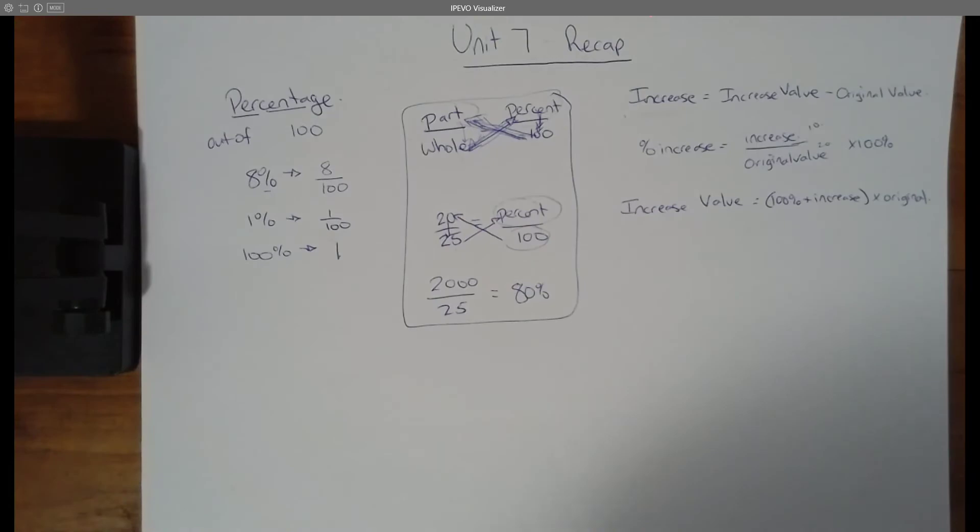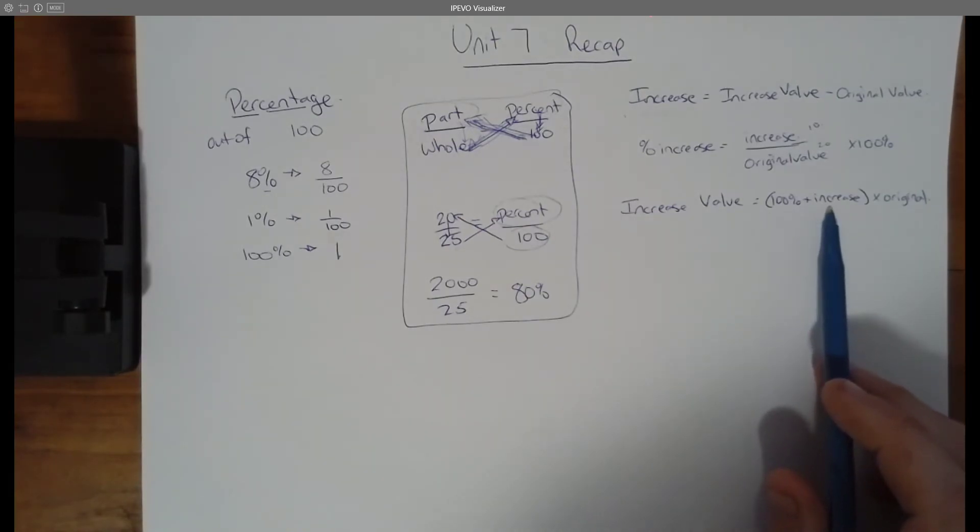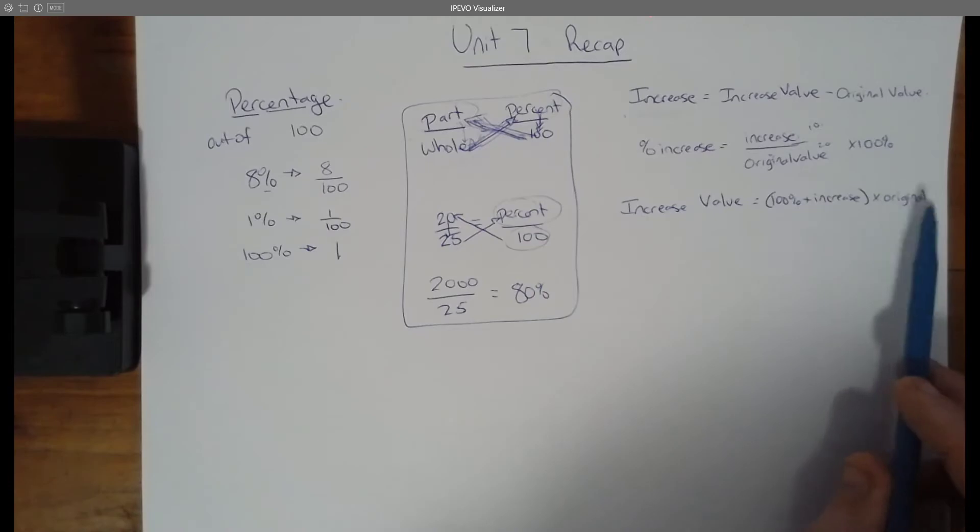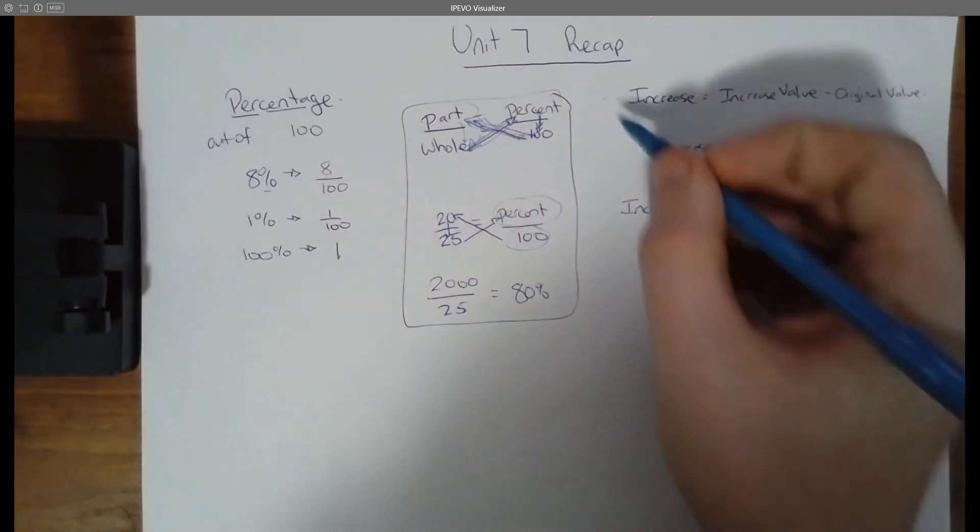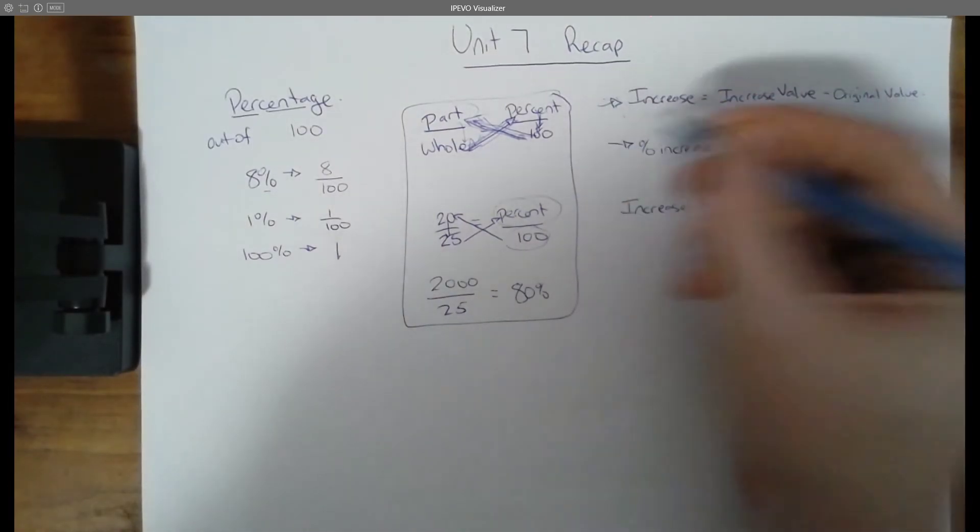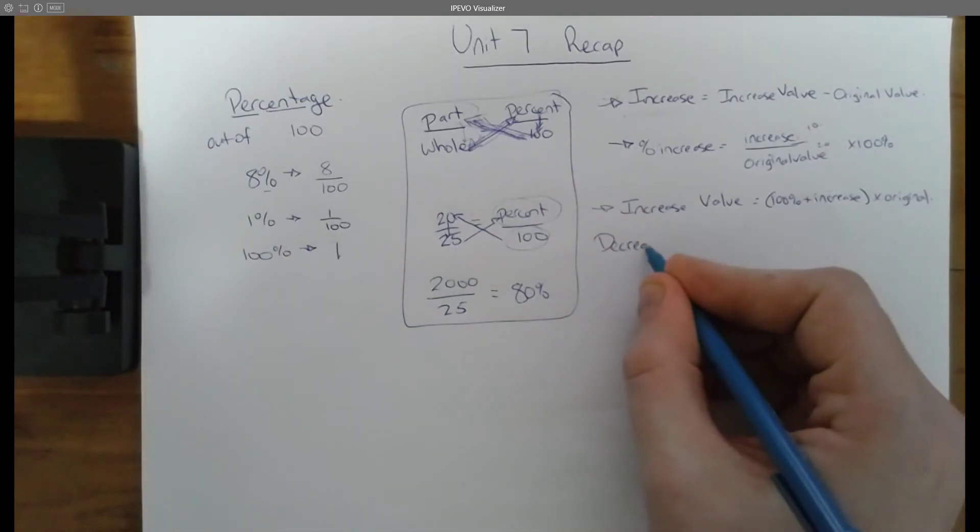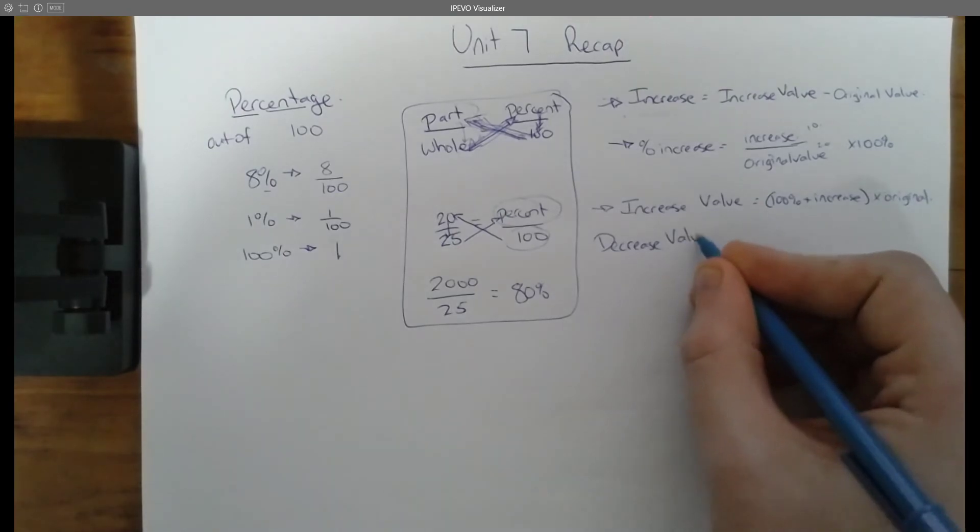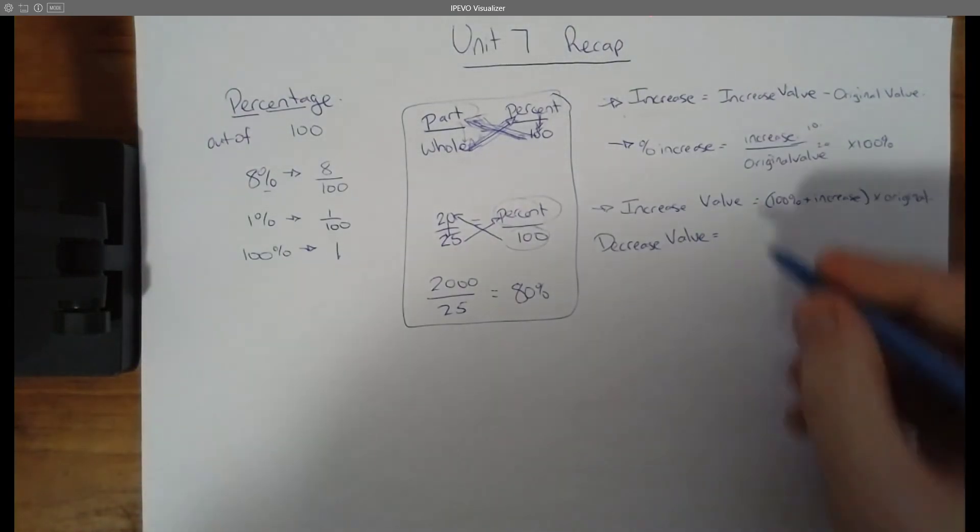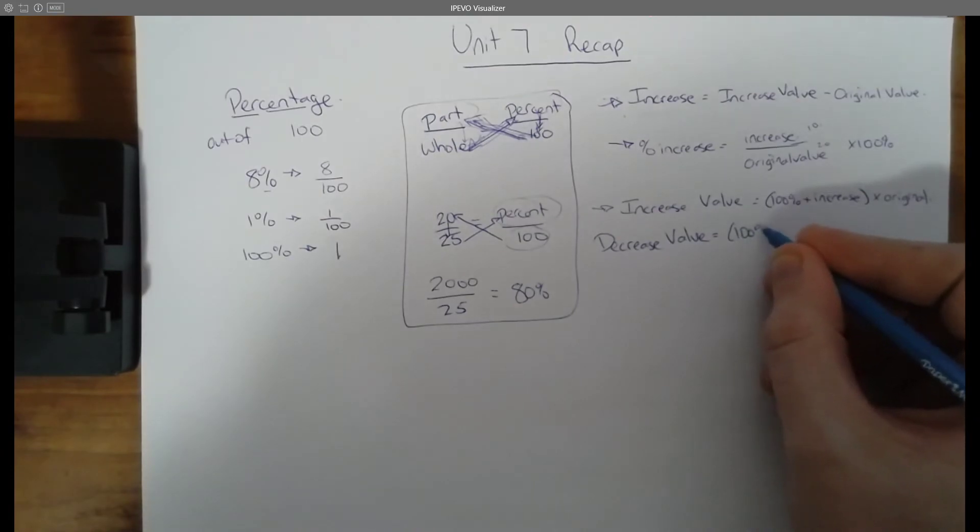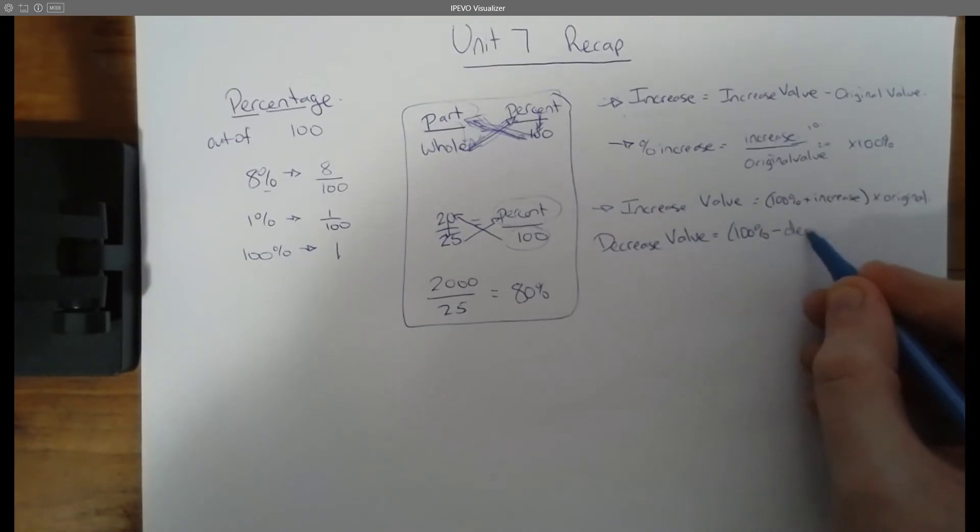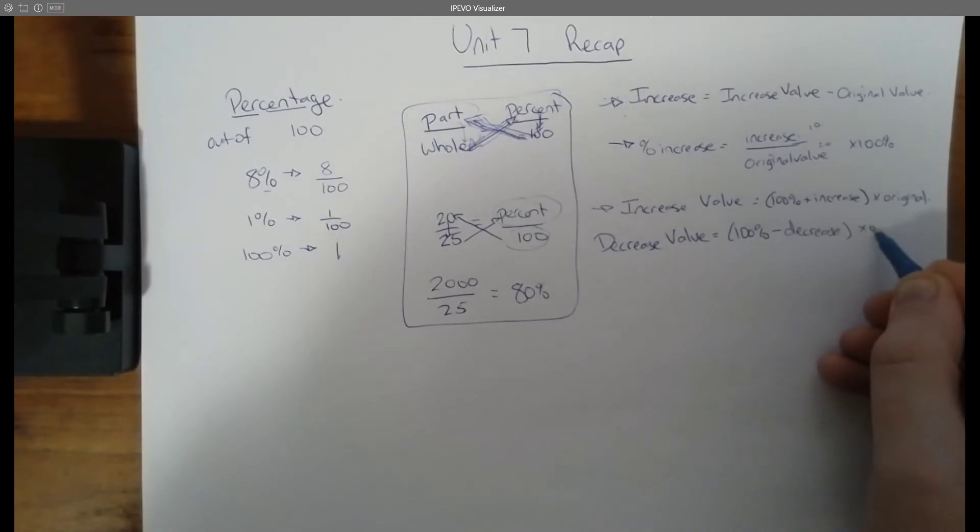Increased value is 100% plus the increase amount times the original value. So, for example, let's say it increased by 8%. Then that means now it is 108% times the original. That's the increased value. It's going to be more than that. When we talk about decrease, these two things are the same. The only thing different is the decrease value equation. And it's not very different. Decreased value, now we're talking about something going down in price. So it's going to be 100% minus the decrease times the original.